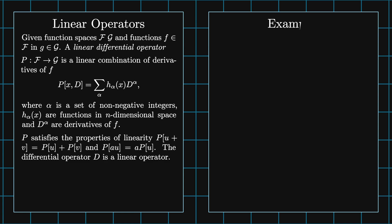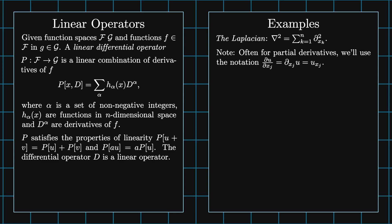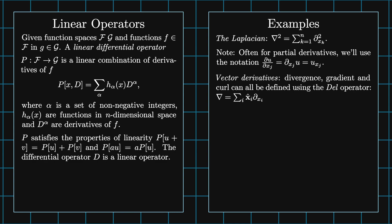So the differential operator D is also linear. For example, the Laplacian, DEL squared equals the sum from K equals 1 to N of D by D X sub K squared, is a linear differential operator. Often for partial derivatives, we'll use the notation DU by D X sub J is the partial derivative with respect to X sub J acting on U, or simply U sub X sub J. Vector derivatives, divergence, gradient, and curl can all be defined using the DEL operator, where DEL equals the sum on I of X hat sub I times the partial derivative with respect to X sub I.